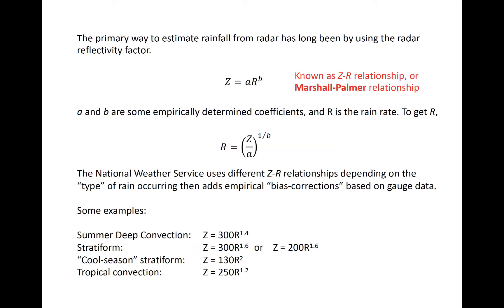The most common way to estimate rainfall from radar is to use the radar reflectivity factor in a Marshall Palmer, or Z-R, relationship. It is simply a power law relationship between reflectivity and the rain rate R.